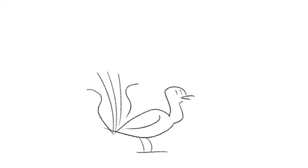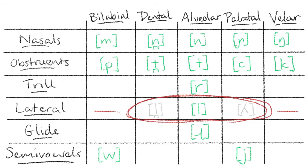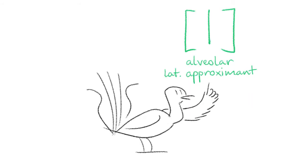Most Pama-Nyungan languages have a lateral consonant for all places of articulation that would anatomically allow it; however Gamilarai only has the standard alveolar lateral approximant, which is kind of boring IMHO, but it does make words a lot easier to pronounce correctly.